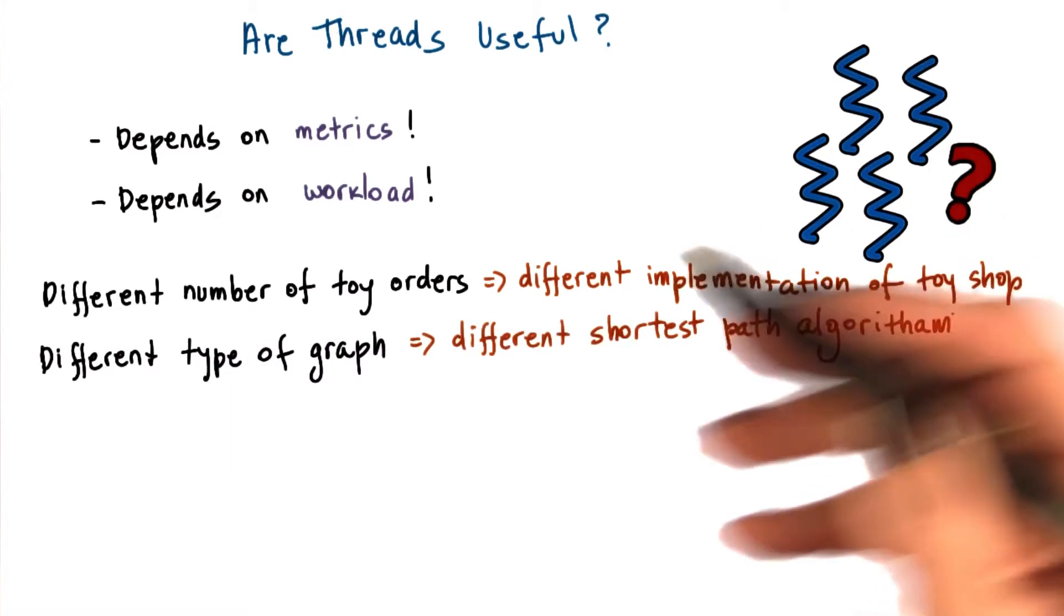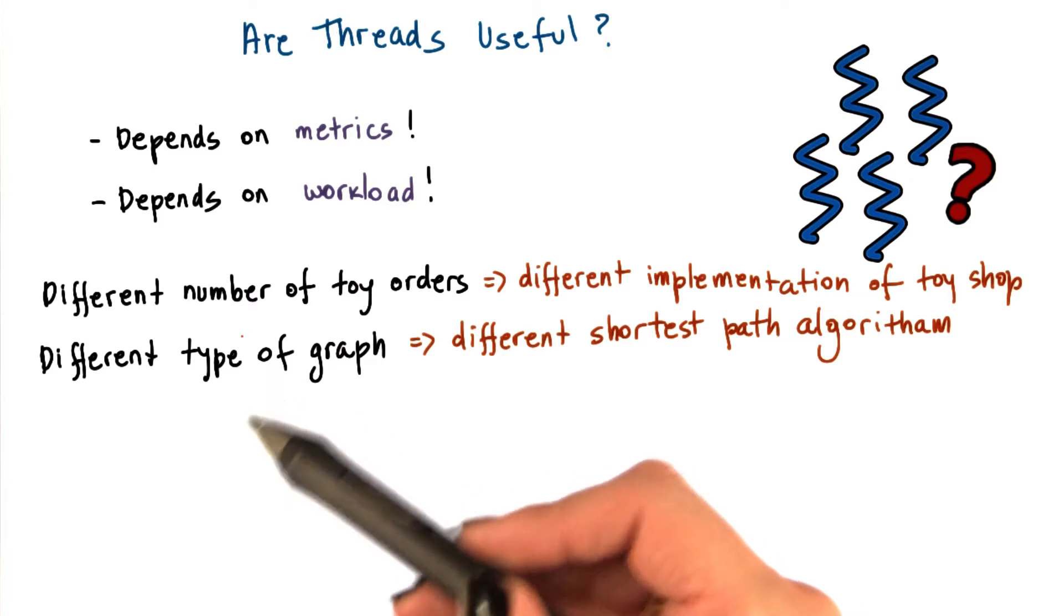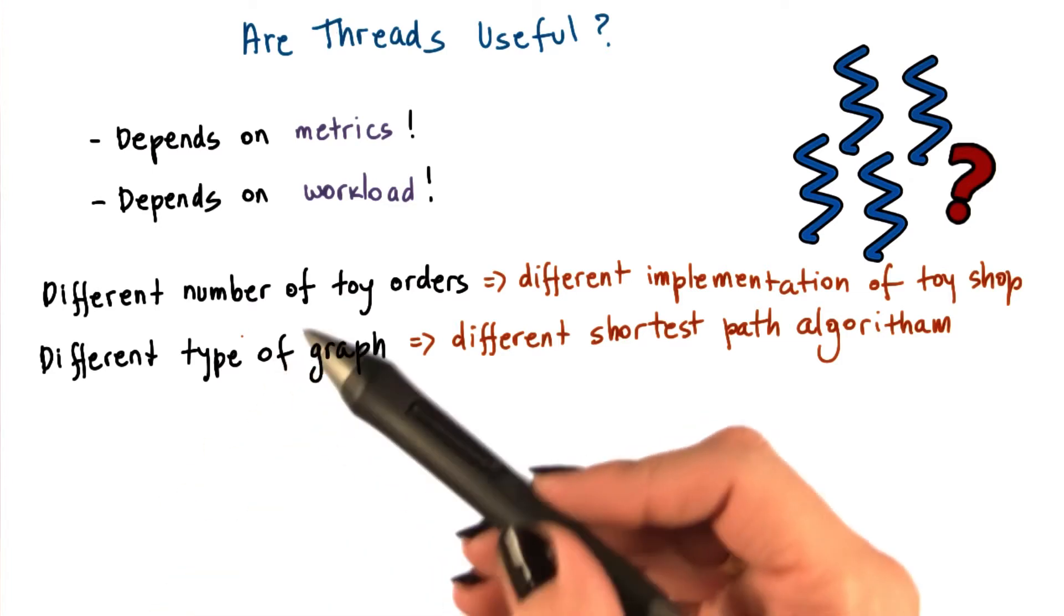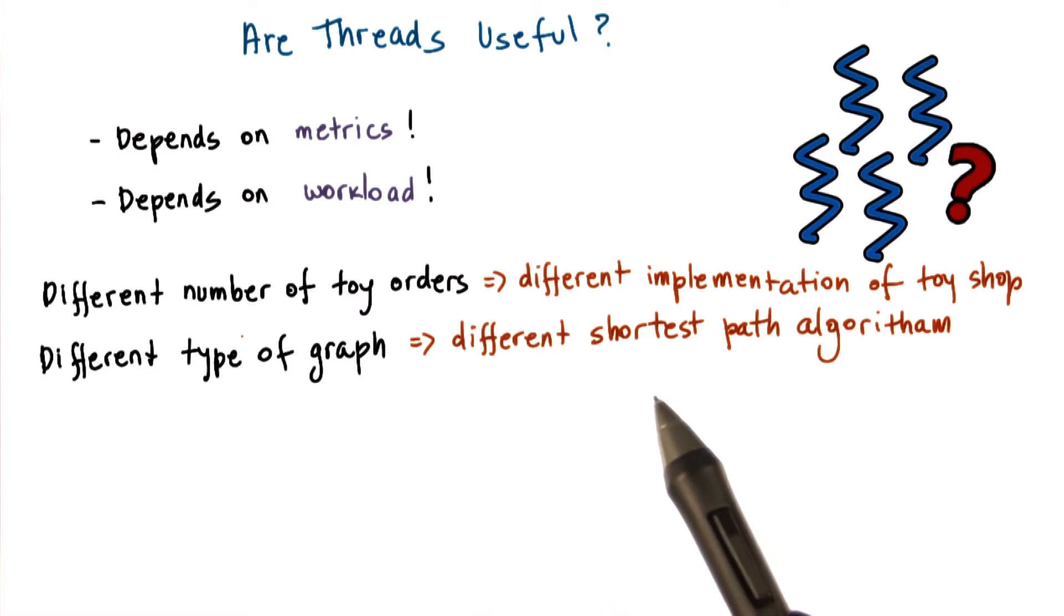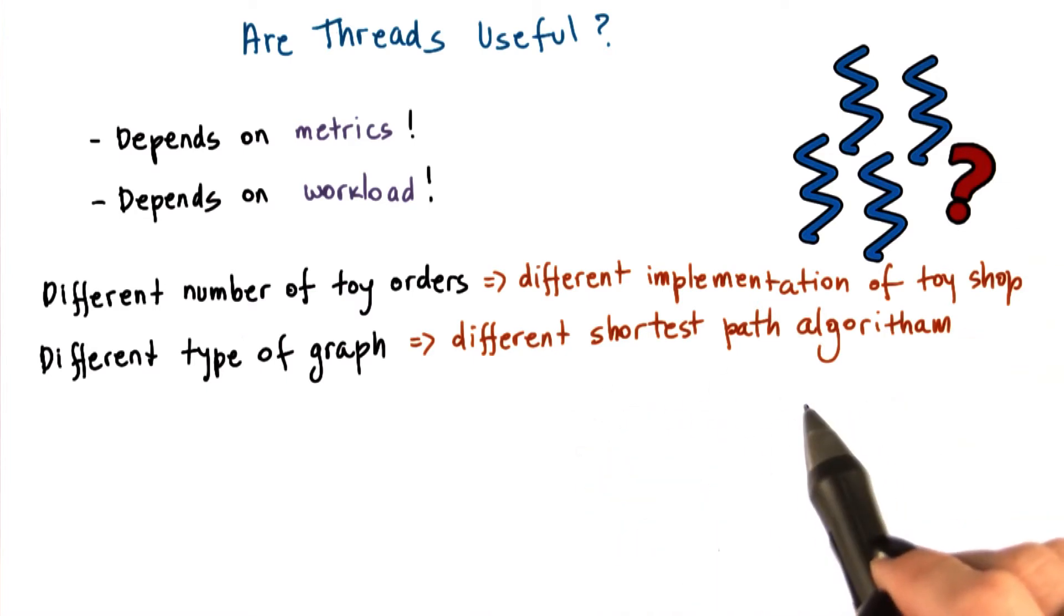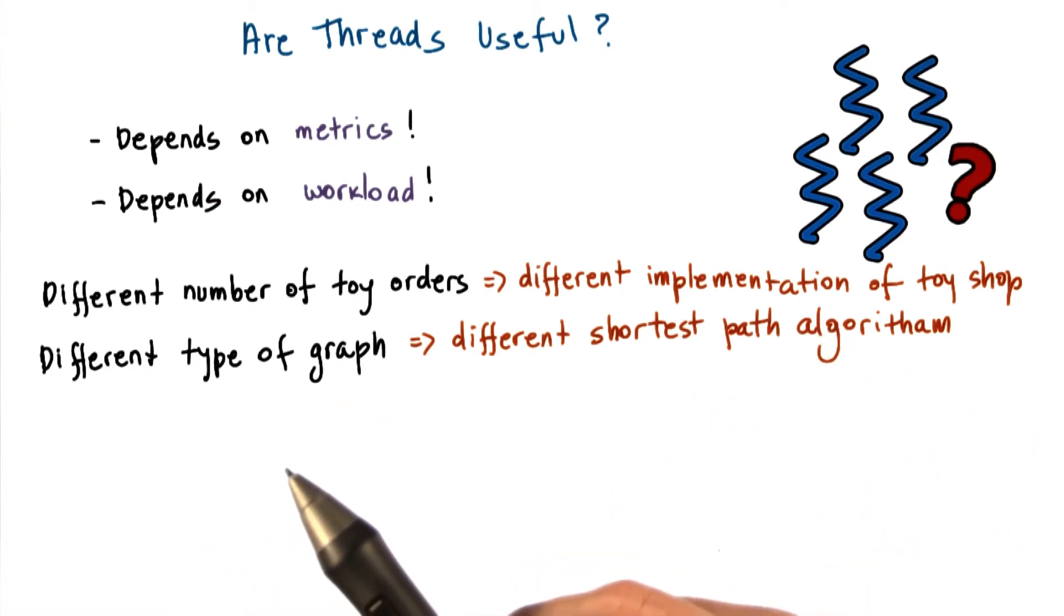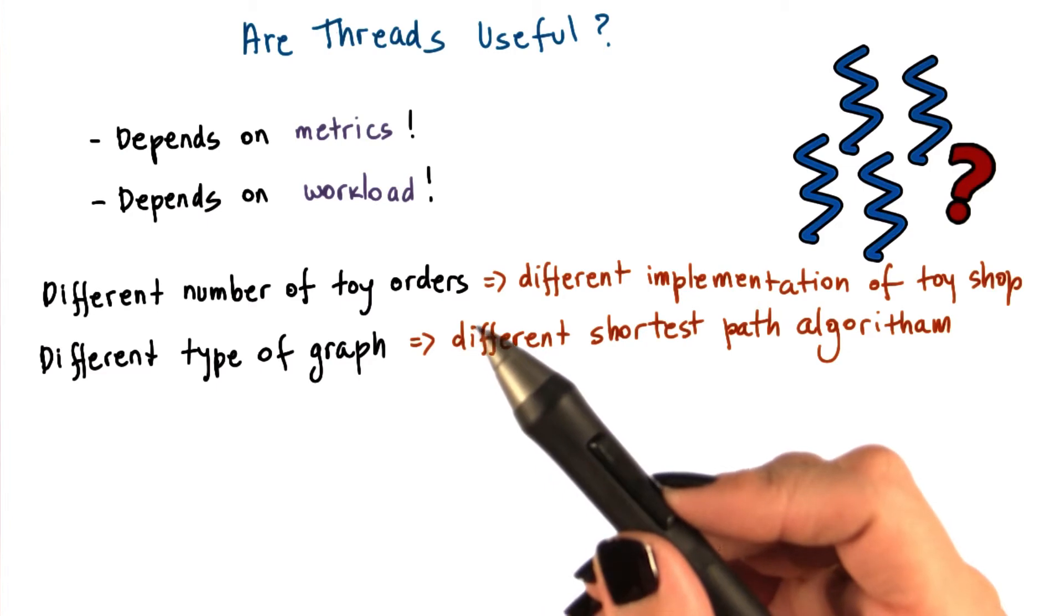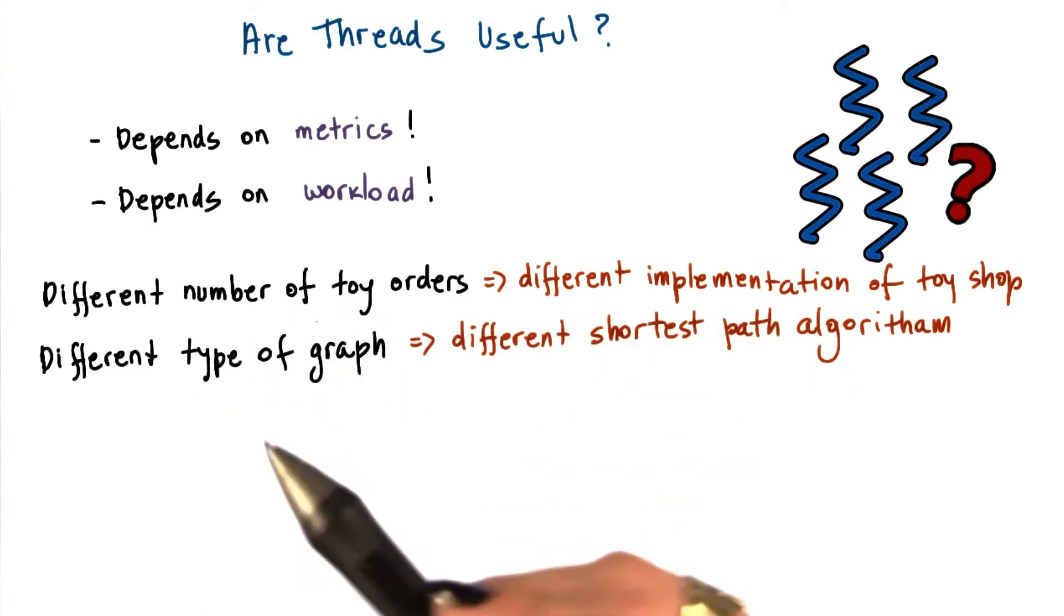If you look at other domains, for instance, if we think about graphs and graph processing, depending on the kind of graph, how well connected it is, it may be suitable to choose different types of shortest path algorithms. Some shortest path algorithms are known to work well on densely connected graphs, whereas others work better for sparsely connected graphs. So again, the workload is something that we're interested in.